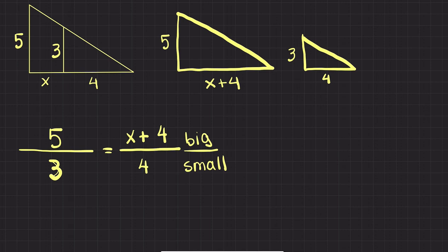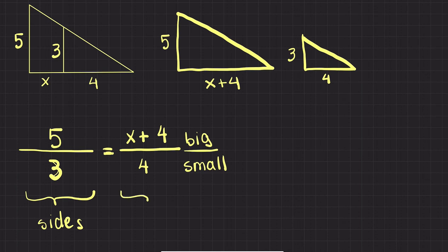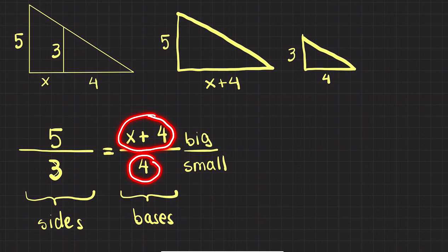On the left side of the equal sign I have the sides, and on the right side I have the bases — the base of the big triangle and the base of the small triangle. What I have now is a proportion, so I'm going to solve it using cross multiplication.